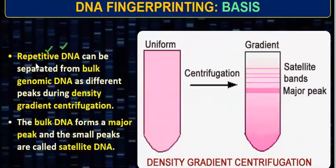Repetitive DNA can be separated from the bulk genomic DNA as different peaks during density gradient centrifugation. If there is a sequence that repeats different times in my father and mother, then there are two homologous chromosomes inside me — one representing my father's DNA and the next representing the mother's DNA. I can read that this sequence is coming from my parents, which becomes proof — am I really the child of my parents or not? But first, if we have separated the DNA, then we will do the reading.